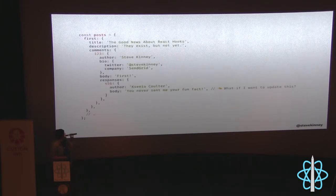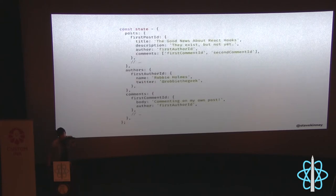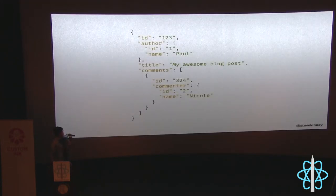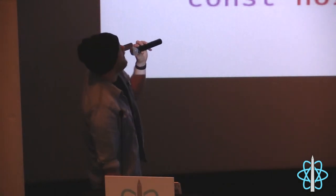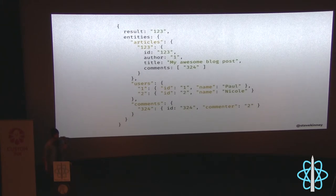If you keep your data flat, you can stick to primitives and avoid weird nesting. For example, if you have posts and want to change just the description of one, a deeply nested object requires a messy update — and any time your JavaScript looks like a triangle, you're messing it up. Keep it flat and just change that one property. You can also use a library like Normalizr, which takes the nested objects your backend gives you and makes them flat for you.